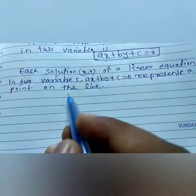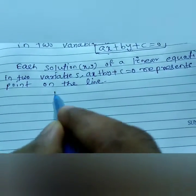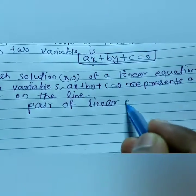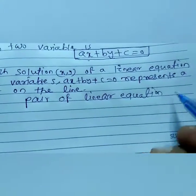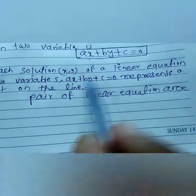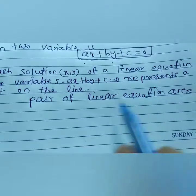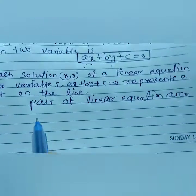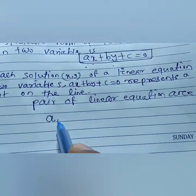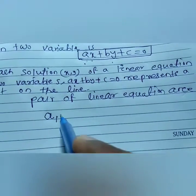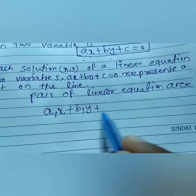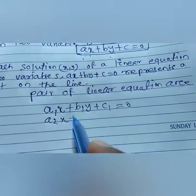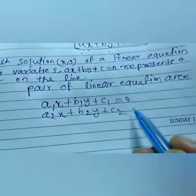Our chapter name is 'pair of linear equations,' so we take two equations. The standard form is ax plus by plus c equals 0, and for two equations we just change the coefficients. For the first equation: a1x plus b1y plus c1 equals to 0. For the second equation: a2x plus b2y plus c2 equals to 0.